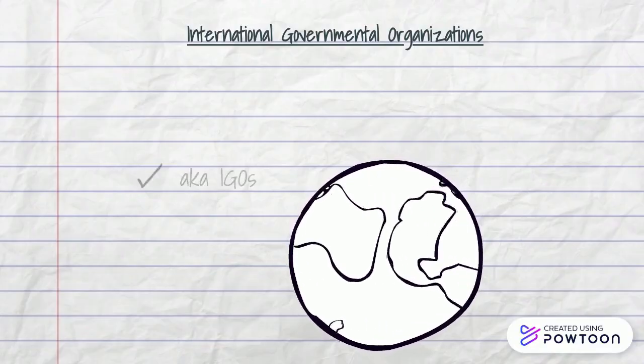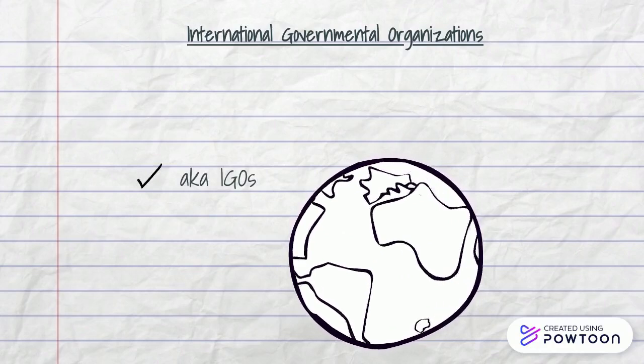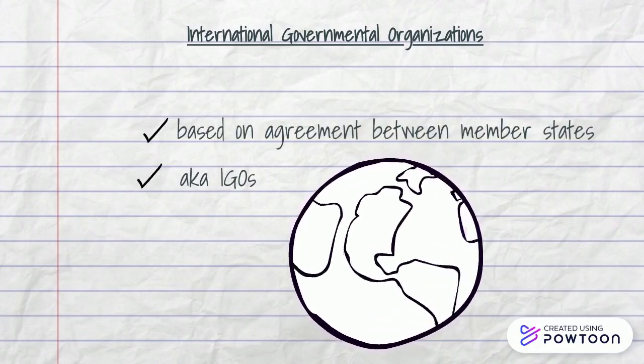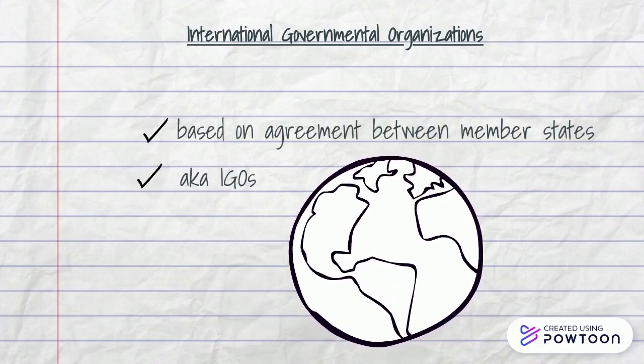These IGOs are formed when member states agree to work together to tackle regional or global governance issues. Members are therefore states, not corporations or civil society organizations.